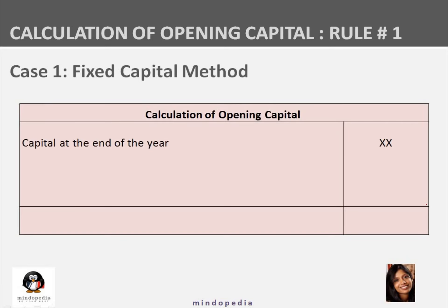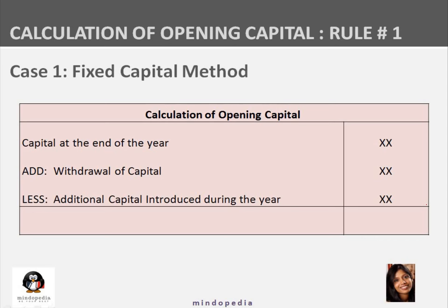For the fixed capital method: start with capital at the end of the year as given in the question. Add back any withdrawal of capital made during the year since it reduced the capital. Subtract any additional capital introduced during the year. This gives us the opening capital at the beginning of the year. Fixed capital method is quite straightforward.